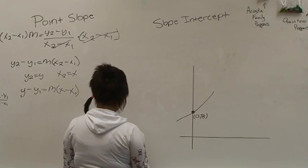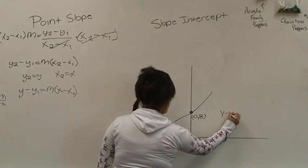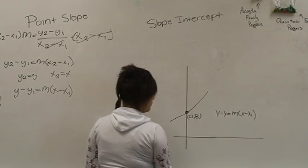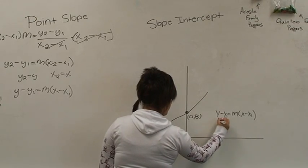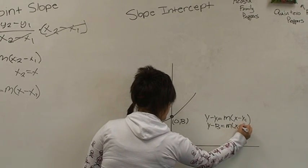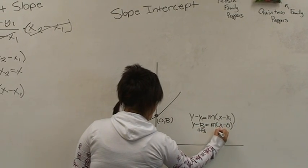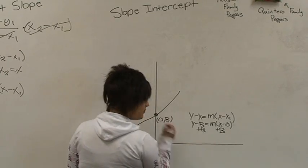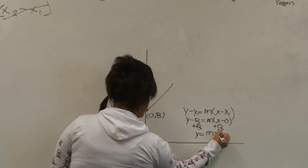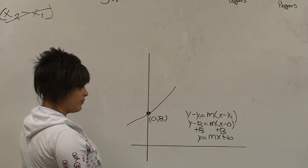We then plug in the 0b values into our point slope formula. Y minus y1 equals m times x minus x1, where y1 is b and x1 is 0. We then distribute the m. Let's keep going. If we add b to both sides, we have y equals mx plus b, which is our slope intercept form of an equation.